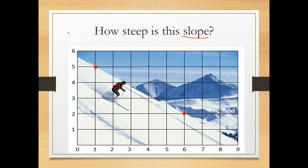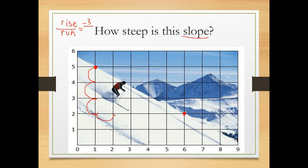Vertical means up and down, horizontal means left and right. To get from one point to another on the skier image, I have to go down three — so that's −3 for the rise. Then I count how far over: one, two, three, four, five. So the slope, rise over run, is −3/5. That's how steep that slope is.